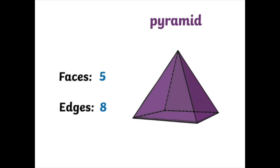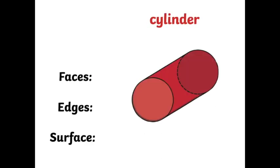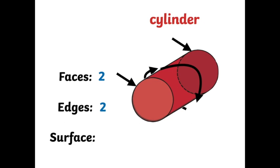Let's go to the next 3D shape. What is it? It is a cylinder. So, let's see how many faces, how many edges, and how many surfaces a cylinder has. Let's begin with the faces. A cylinder has 1, 2 faces. How many edges does a cylinder have? 2. And what about surfaces? A cylinder has 1 curved surface. So, when asked to describe a cylinder, you could say: a cylinder has 2 faces, 2 edges, and 1 surface.